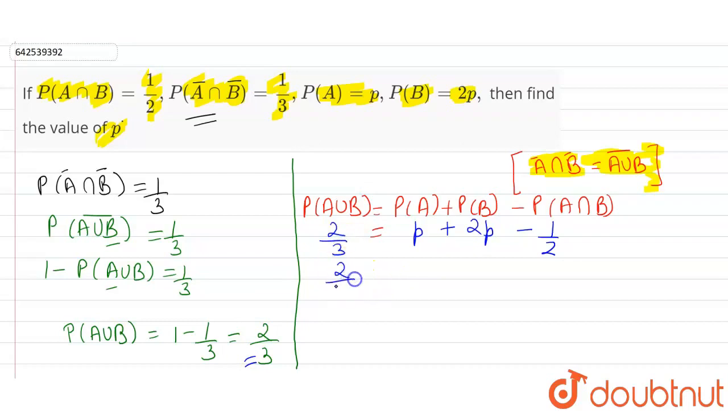From here, 2/3 plus 1/2 equals 3p. The LCM will be 6, so 4 plus 3 equals 3p. Therefore, 3p equals 7/6.